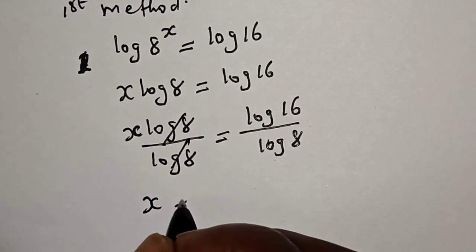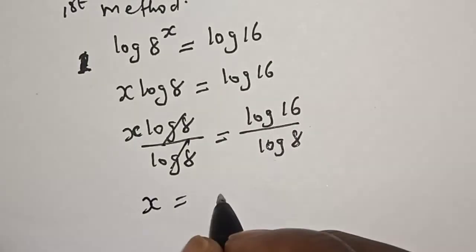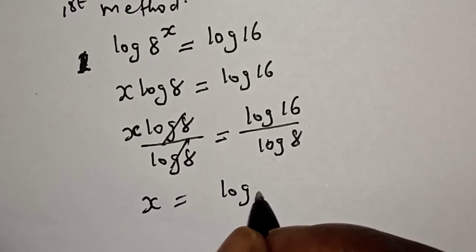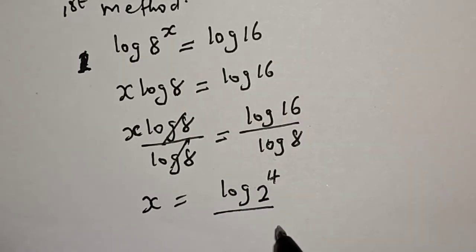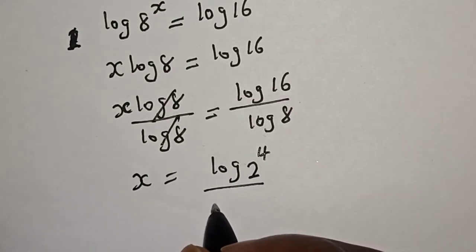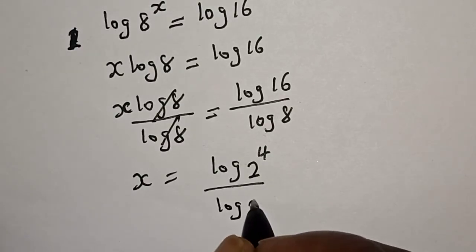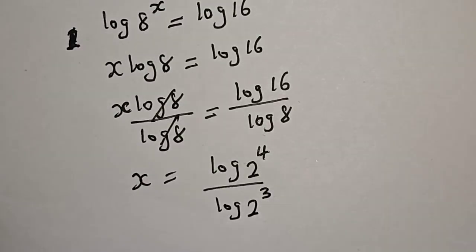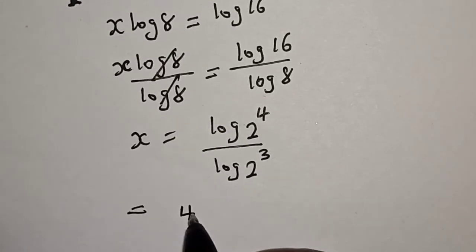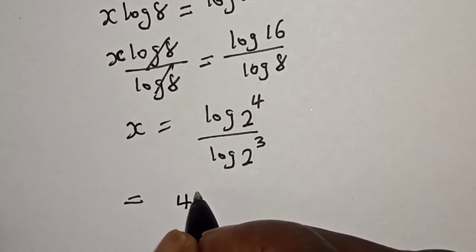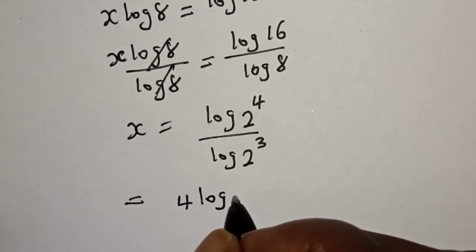x is equal to log 16 can be written as log of 2 raised to power 4 over log 8 can be written as log 2 raised to power 3. Then, this is equal to 4 log 2 over 3 log 2.